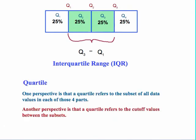Now a bit of caution here. When we talk about the interquartile range, one perspective of a quartile refers to the subset of all the data values in each of those four parts. Another perspective of a quartile is that it refers to the cutoff values between the subsets. So when we're talking about quartile one, when we're dealing with the computation, then the reference is to that value. And then for quartile three, the reference is to that value. But if we're looking at it from a data perspective, it deals with the data that falls in the third quartile.